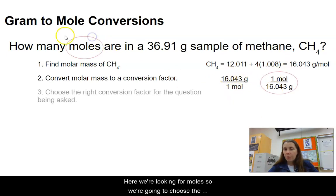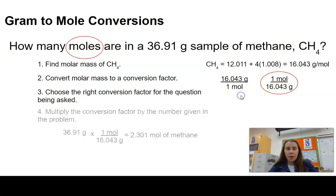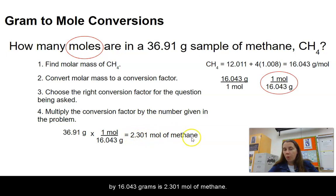Here we're looking for moles, so we're going to choose the conversion factor that has moles in the top, and then multiply. 36.91 grams times one mole divided by 16.043 grams is 2.301 moles of methane.